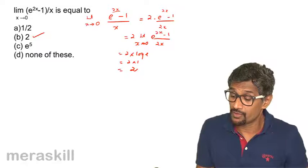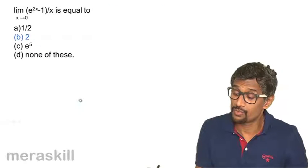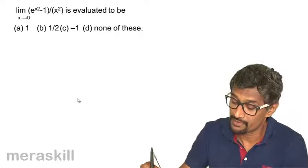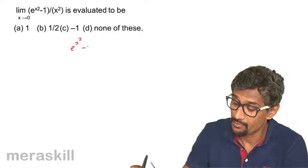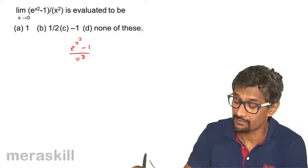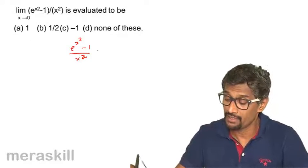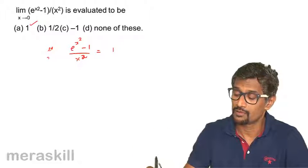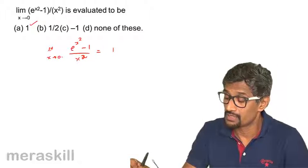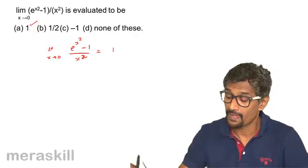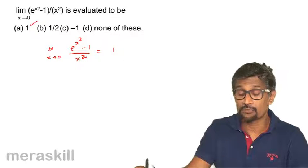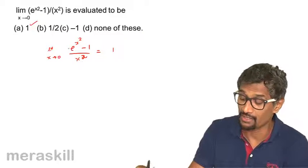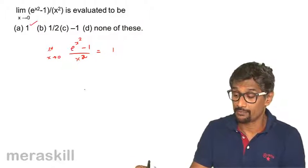A simple example to illustrate this rule. Next we have e raised to x squared minus 1 divided by x squared. This is a direct substitution: e raised to x squared minus 1, divided by the same term x squared. So it turns out to be log e to the base e, which is 1. Note that substituting x = 0 gives an indeterminate form, so we use the formula to get the answer as 1.